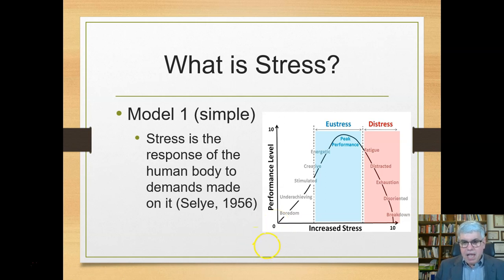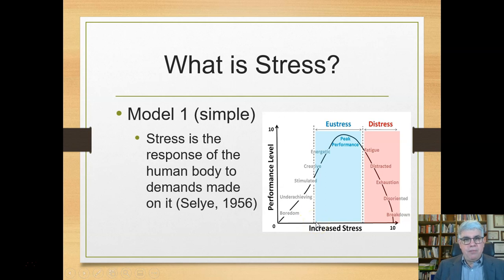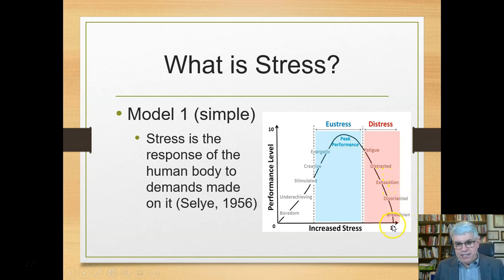What results is an inverted U-shape curve — sometimes called a Goldilocks curve because right in the middle, it's just right. When stress is really low, like having no responsibilities at work, you might be bored and underachieving. As it increases, you wake up, become creative and energetic, and reach peak performance. But if demands keep increasing, you start getting tired and distracted, which can turn into exhaustion and, in extreme cases, disorientation and breakdown.